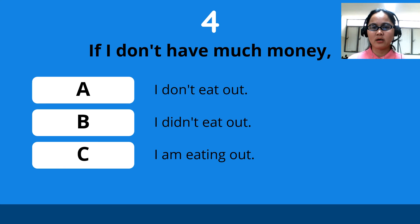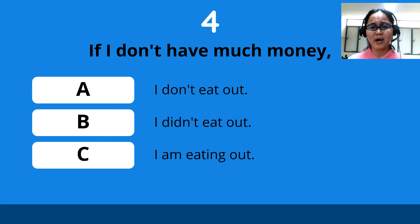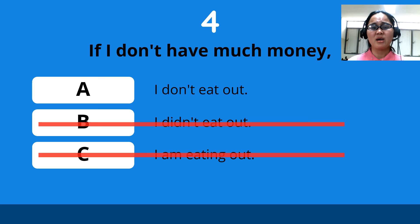Number four: if I don't have much money — A. I don't eat out, B. I didn't eat out, C. I am eating out. The answer is A: I don't eat out.